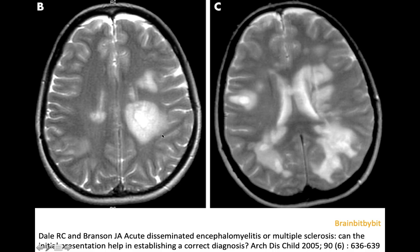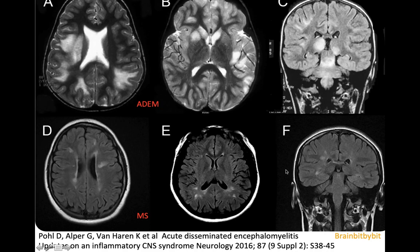The white matter lesions in acute disseminated encephalomyelitis are not as well defined as in multiple sclerosis, as you can see on this image. They are also located in the deep gray matter in contrast to MS, and there is relative sparing of the periventricular region in ADEM. The lesions are more asymmetric in ADEM than in multiple sclerosis.